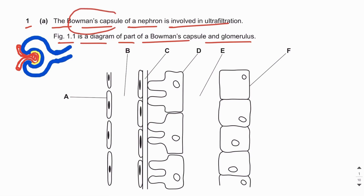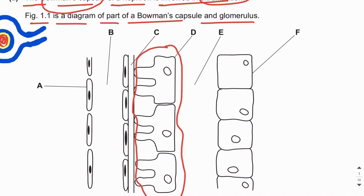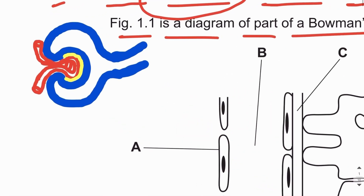The Bowman's capsule is a part of the nephron involved in ultrafiltration — that is, the filtration of blood plasma into the lumen of the Bowman's capsule. Figure 1.1 is a zoomed-in diagram of part of the Bowman's capsule and glomerulus. This is the glomerular capillary, this part is the basement membrane, and this is the epithelial lining of the Bowman's capsule which includes podocytes with their foot processes, and this is the lumen of the Bowman's capsule.